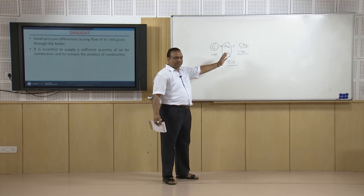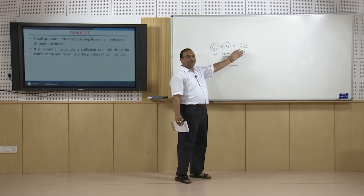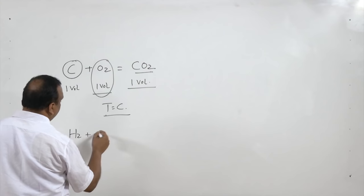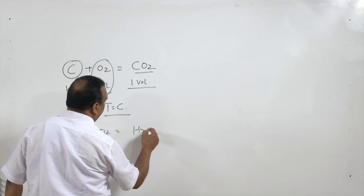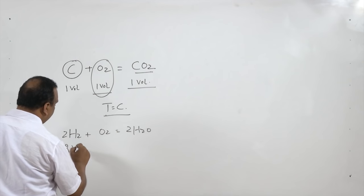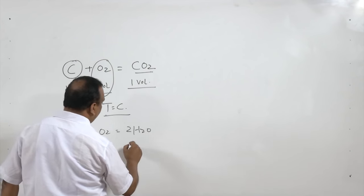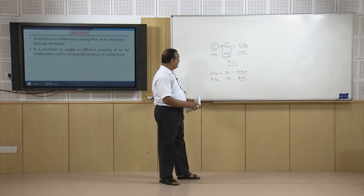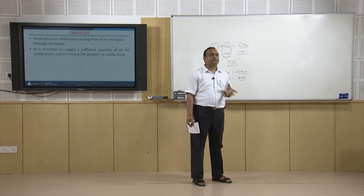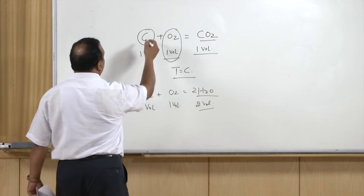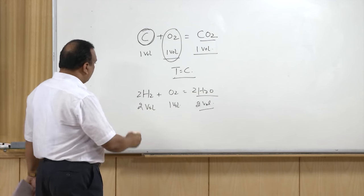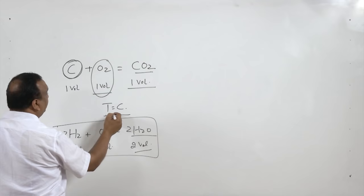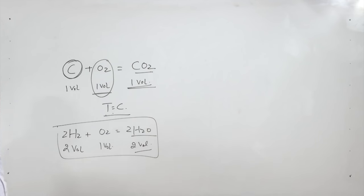If temperature differs, volume will vary. For hydrogen, 2H₂ + O₂ → 2H₂O, but hydrogen is only 4–5% of fuel, so it is not significant. The dominant component is carbon. Therefore, for chimney height calculations we assume that at the same temperature, the volume of air equals the volume of flue gases. Since density is a function of temperature, we use a reference density at 0°C (273 K) and pressure 101.3 kPa.